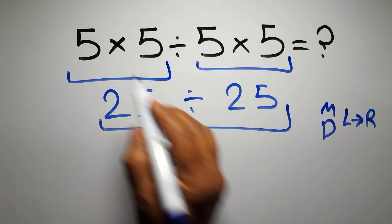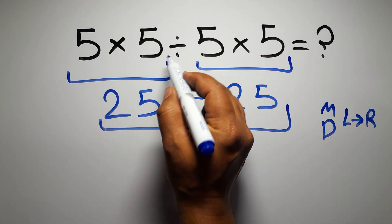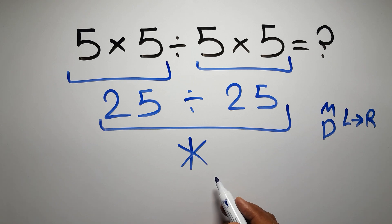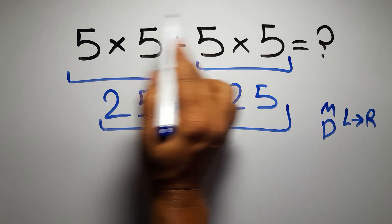In this expression, we have two multiplications and one division, so we have to work from left to right.